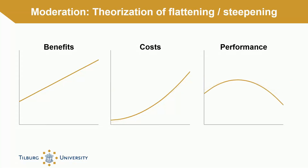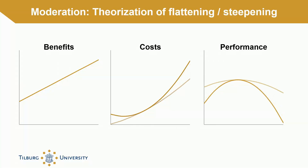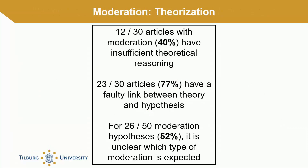Similarly, the flattening or steepening of the curve can be theorized by arguing that the curvilinearity of the cost curve strengthens. As you can see here, as the cost curve's curvilinearity strengthens, the observed inverted U-shape becomes stronger. We find that 40% of articles exploring moderation of U-shapes have insufficient theoretical reasoning, while 77% of articles contain a faulty link between theory and hypotheses, where the underlying theorization is incorrectly translated into hypotheses. In turn, this often leads researchers to overlook fully developed theoretical arguments in their testing. Furthermore, we find that for 52% of moderation hypotheses it is unclear which type of moderation is actually expected by the researchers. These issues appear largely driven by a general lack of awareness of the fact that two distinct types of moderation exist.